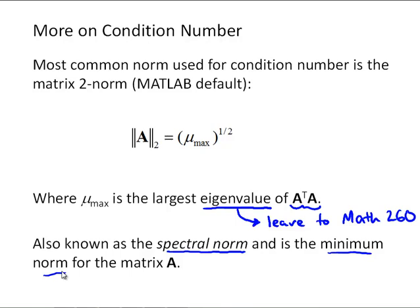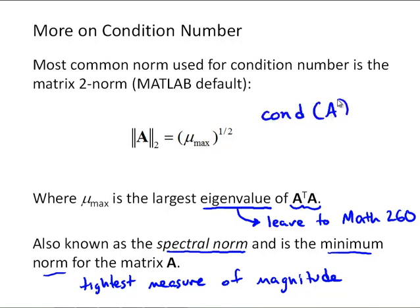And just know now that this matrix 2-norm, also called the spectral norm, it's the minimum norm of the matrix A. So it's a scalar value that gives us a sense of the magnitude of the matrix. And since it's the minimum norm, we can think of it as the tightest measure of the magnitude of that matrix. Since it is the minimum norm. And again, this is the default norm used for the MATLAB function condition of A.